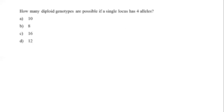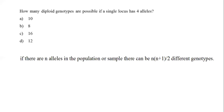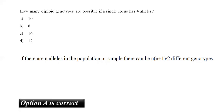The next question: how many diploid genotypes are possible if a single locus has 4 alleles? Options are 10, 8, 16, and 12. At a single diploid locus, if there are N alleles, the number of different genotypes is N(N+1)/2. With 4 alleles: 4 × 5 / 2 = 10. The correct answer is option A, 10.